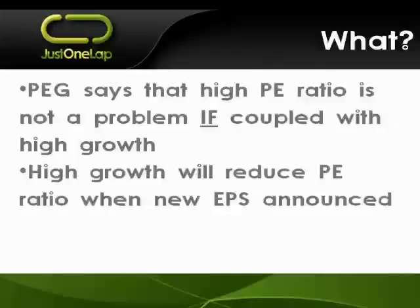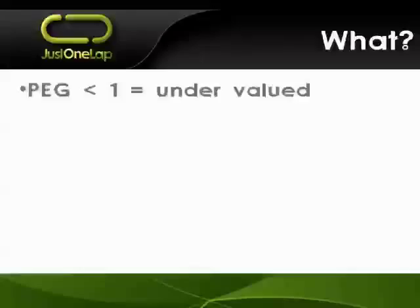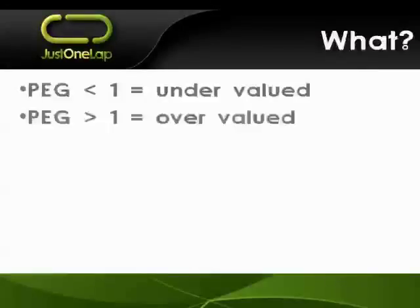Typically, say you've got a share price of 20 Rand and earnings of 2 Rand. Even if the earnings go to 2 Rand 10, that PE ratio is going to come down. What you really want is a significant increase in earnings from 2 to 2.50 or even 3 Rand to have a good pull down. We take the PE, we divide it by that growth, and a number below 1 would tell us the share is typically undervalued.